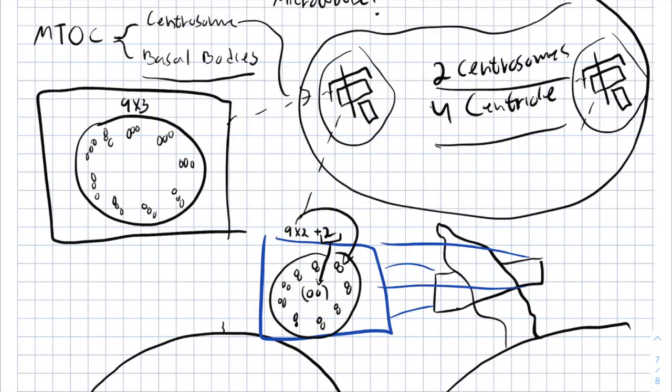It is very important to mention that I am talking about the cilium and flagellum of eukaryotic cells. The prokaryotic cell has a different structure and different proteins. On the IMAT exam, they are going to ask you about the microtubule organization center and the cilium and flagellum of eukaryotic cells 99% of the time. So make sure to know that the cilium and flagellum of eukaryotic and prokaryotic cells are different from each other and have different proteins and structure.